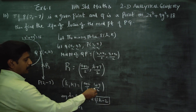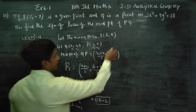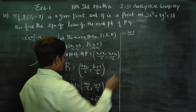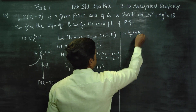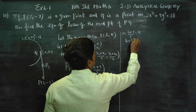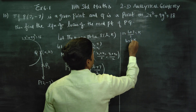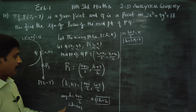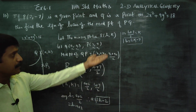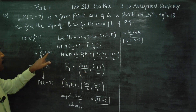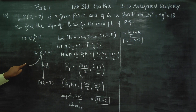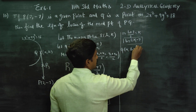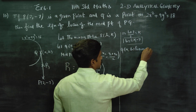K equals (b + 7) / 2, which implies b + 7 = 2k, therefore b = 2k - 7. Now a and b are ready. Since Q(a, b) lies on the curve 2x squared plus 9y squared = 18, we substitute a for x and b for y.